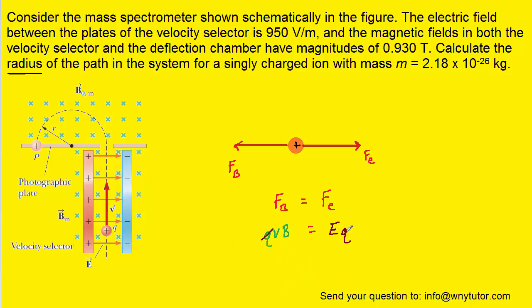Notice also that charge appears on both sides of the equation, so it can be divided out. And then we can solve for the velocity of the particle by dividing both sides of this equation by b, the magnetic field.